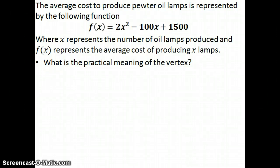We're dealing with another real-life equation here. This is the average cost to produce pewter oil lamps. It really doesn't matter what the product is - in this case, it just happens to be oil lamps. We're given the function right here, and we're asked to find the practical meaning of the vertex.